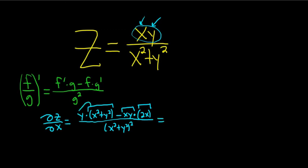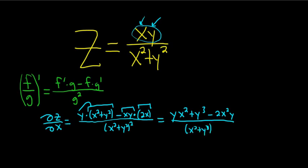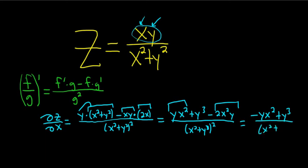Let's distribute the y, so we get yx squared plus y cubed, minus 2x squared y. All of this is over x squared plus y squared, squared. Does anything cancel here? Yes — we have yx squared and minus 2yx squared, giving us minus yx squared plus y cubed on top, and x squared plus y squared squared on the bottom. That's the partial derivative with respect to x.